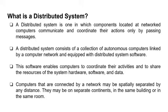A distributed system is one in which components located at networked computers communicate and coordinate their actions only by passing messages. It consists of a collection of autonomous computers linked by a computer network and equipped with distributed system software. That software enables computers to coordinate their activities and share resources — hardware, software, and data. Computers connected by a network may be spatially separated by any distance, on separate continents, the same building, or the same room.